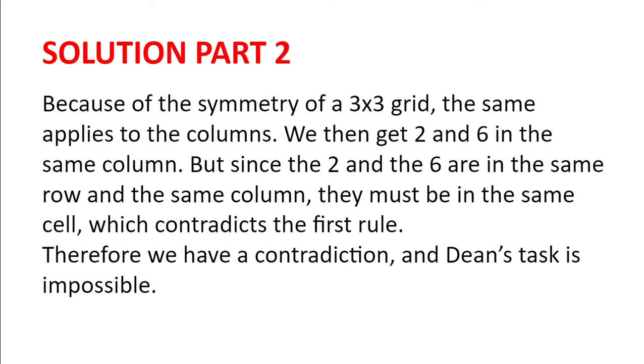But since the 2 and the 6 are in the same row and in the same column, they must be in the same cell, which contradicts the first rule. We therefore have a contradiction and hence Dean's task is impossible.